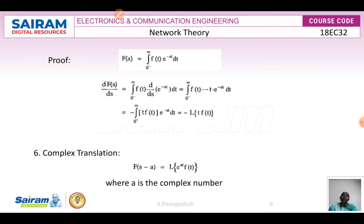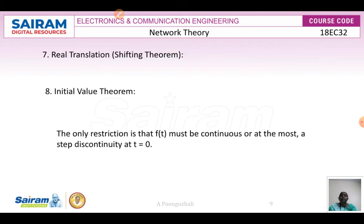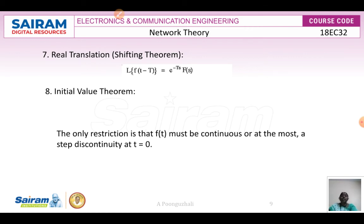The next property is complex translation. F(s - a) is the Laplace transform of e^(at)·f(t), where a is a complex number. Following that is the real translation property, or shifting theorem: the Laplace transform of f(t - t₀) is equivalent to e^(-t₀s)·F(s).